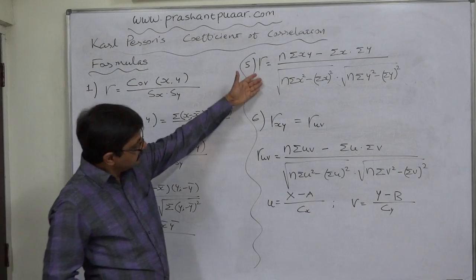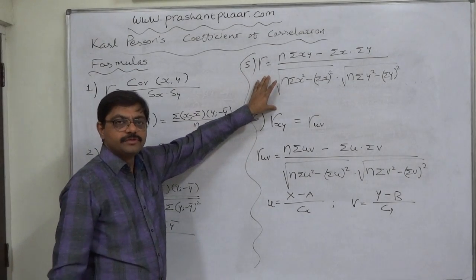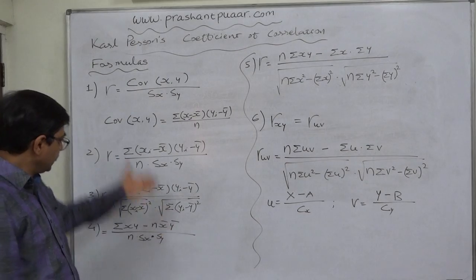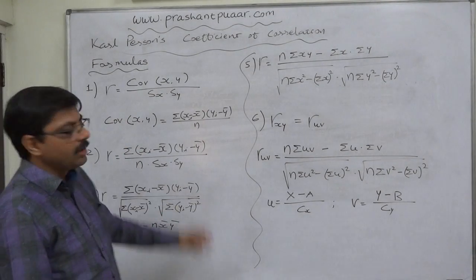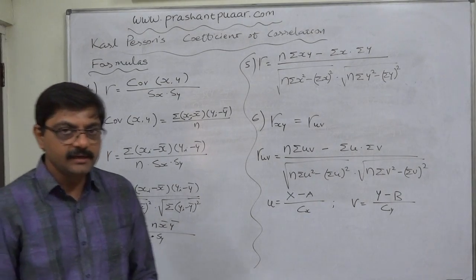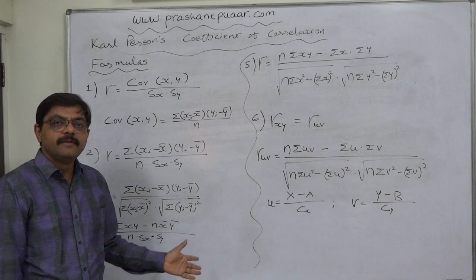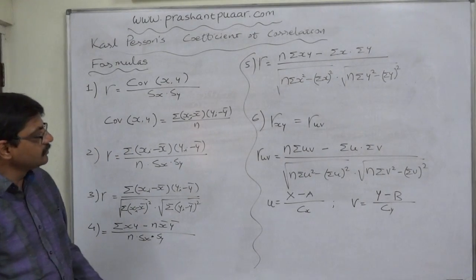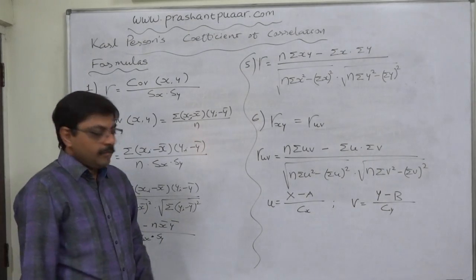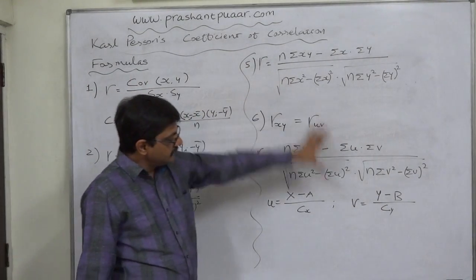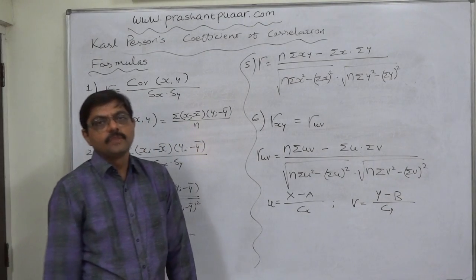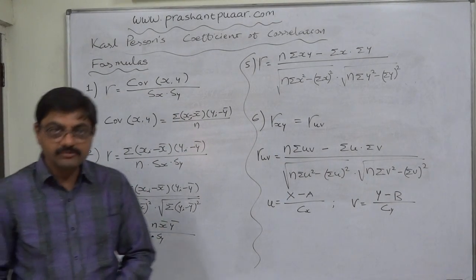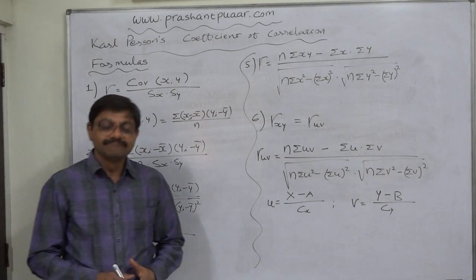Through any of these formulas we can calculate the coefficient of correlation very easily. The earlier formulas are also not useless — we can use them to solve unique types of questions which may seem very hard at first sight, but become easy once we know the right formula. In the next lecture, we will use these formulas to calculate coefficient of correlation, then solve small problems and some unique types of problems. Thank you very much.